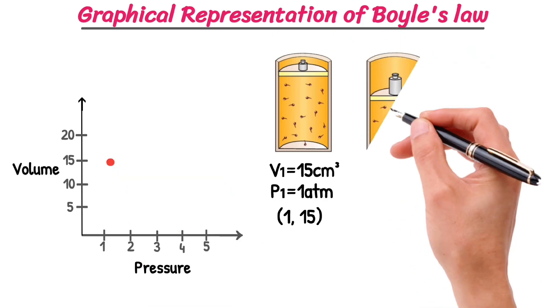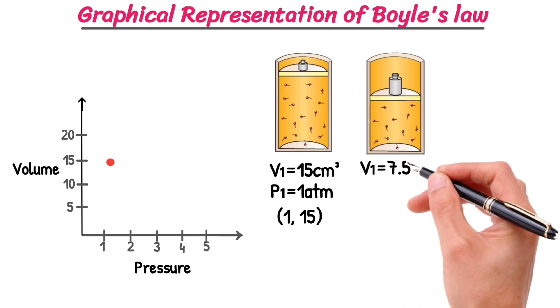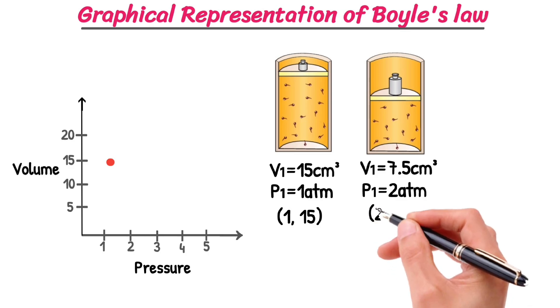Now, I am going to push down the piston, which decreases the volume to 7.5 centimeter cube. As we do this, the pressure increases to 2 atmospheres. Our new coordinate is (2, 7.5). On the graph this point shows the new coordinates.